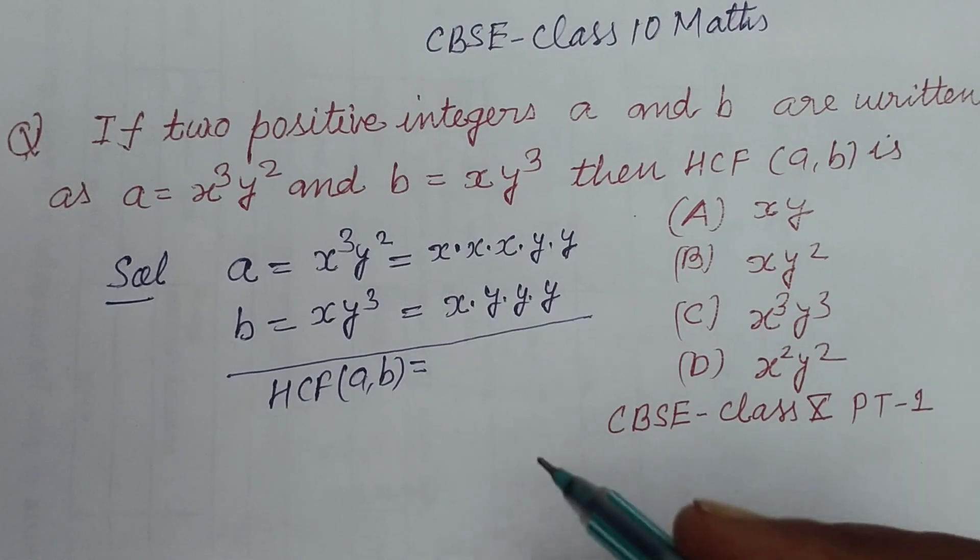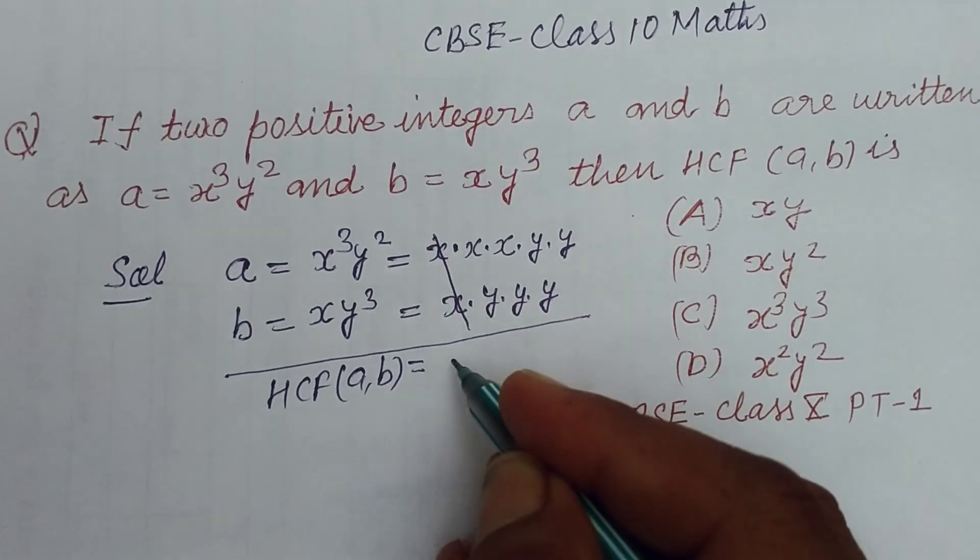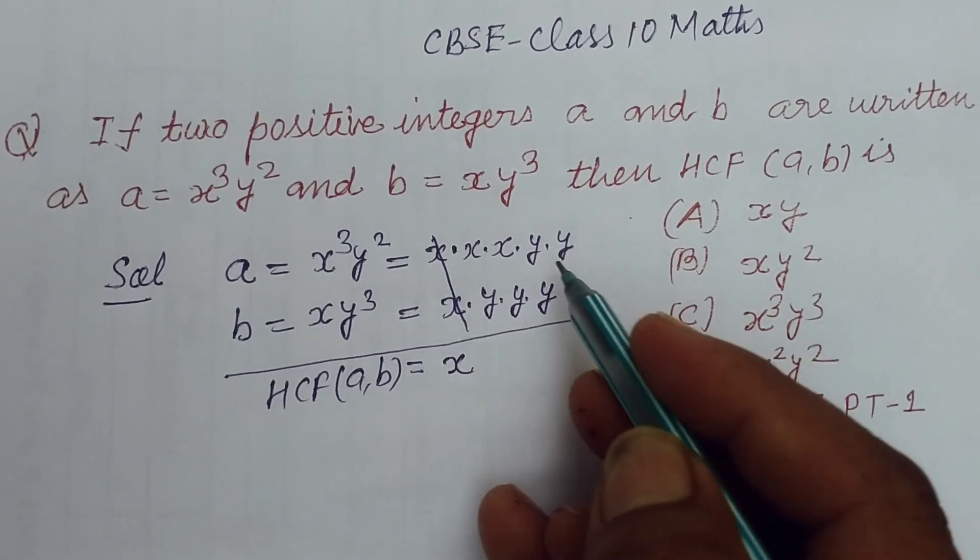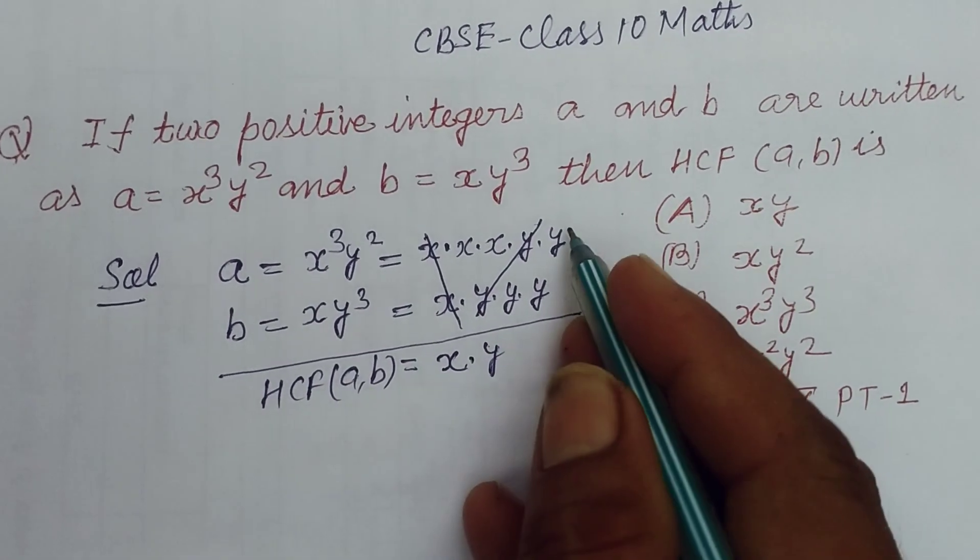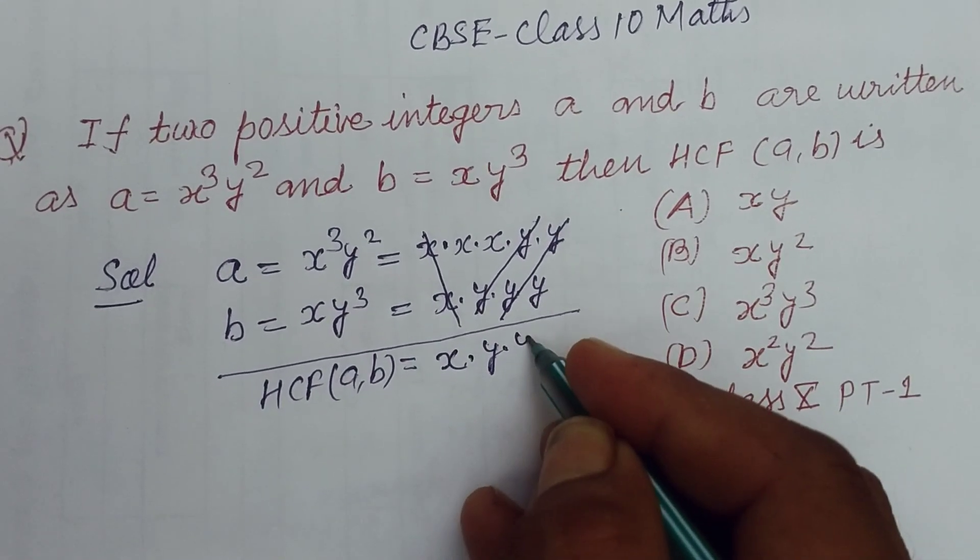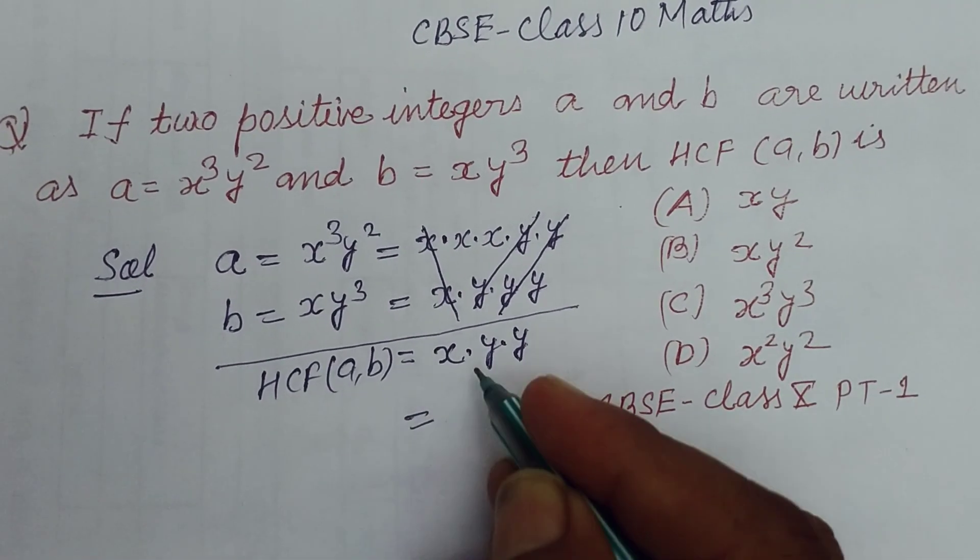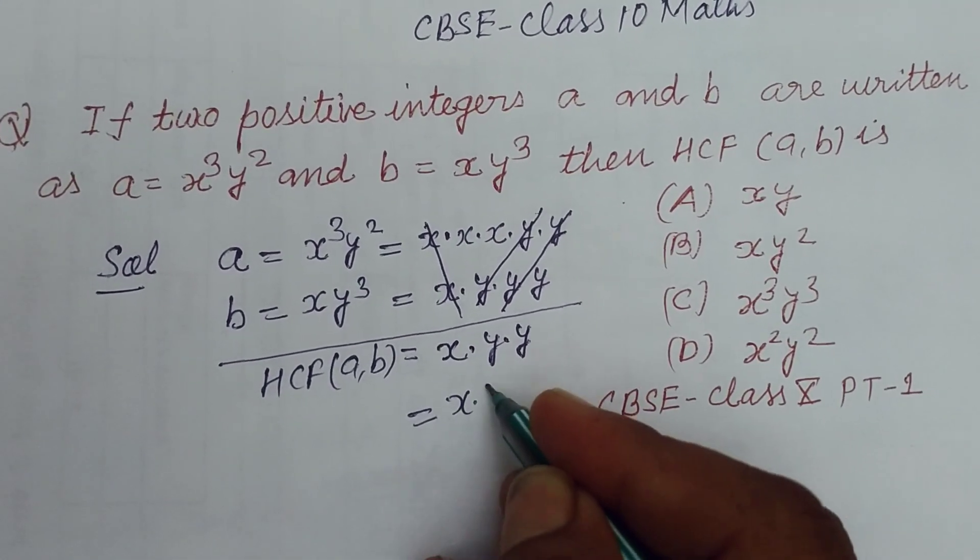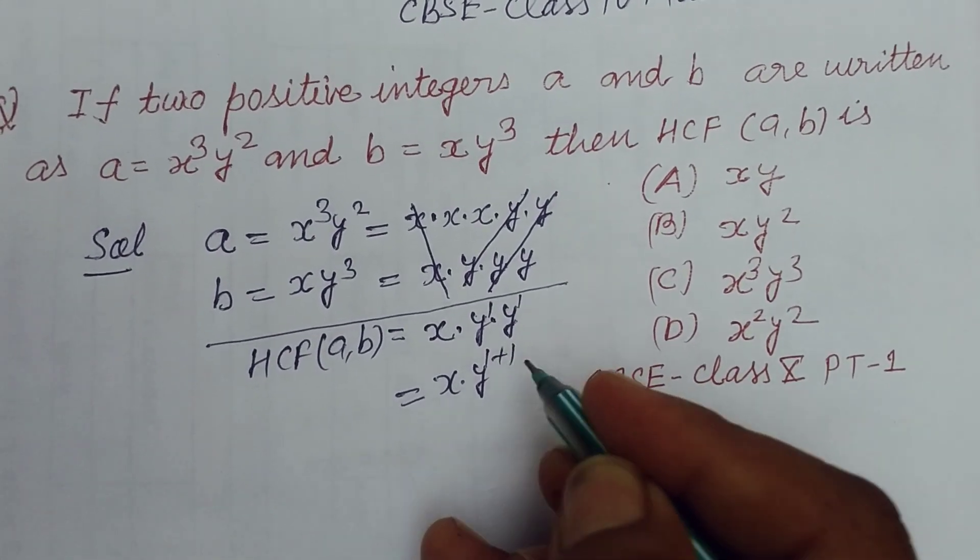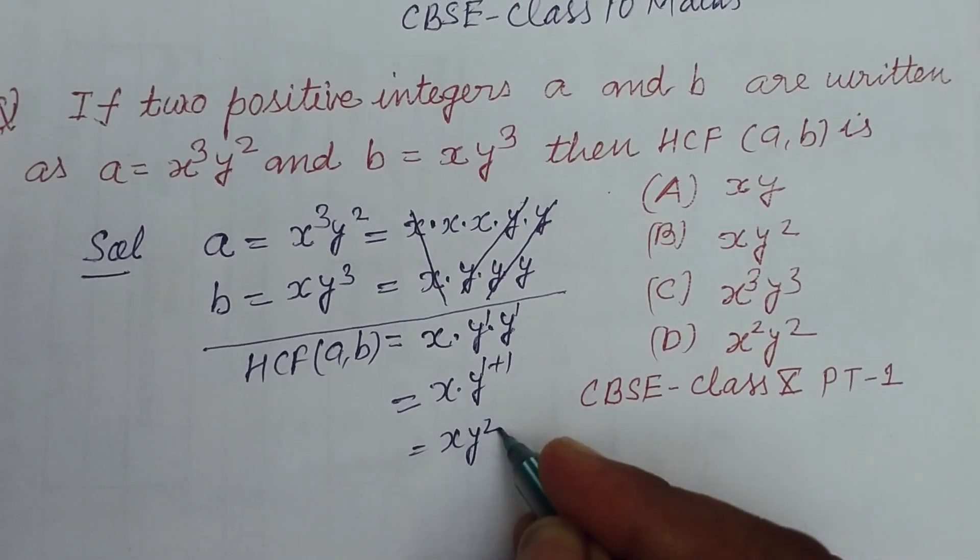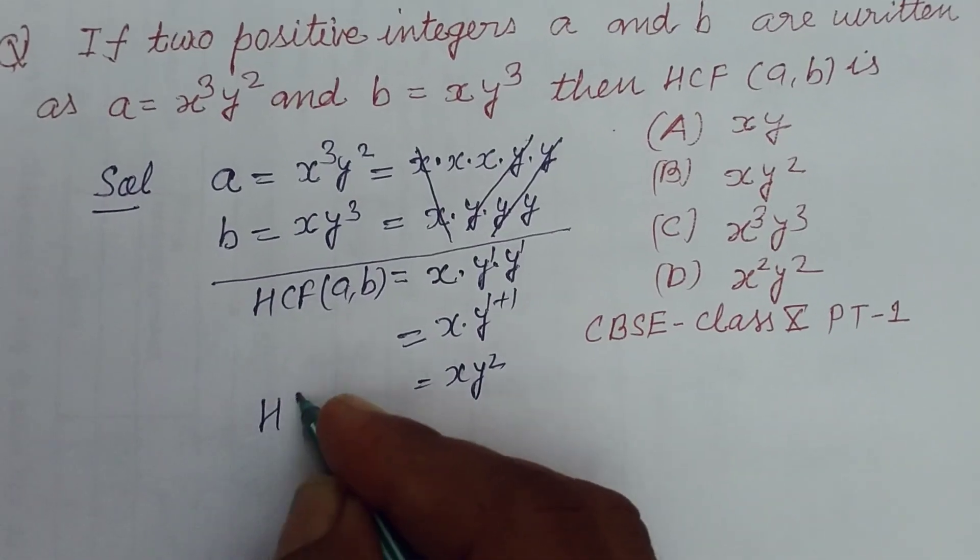In HCF we take only common factors. So x appears three times in a and once in b. y appears twice in a and three times in b. Therefore, x×y² is the HCF of the given numbers a and b.